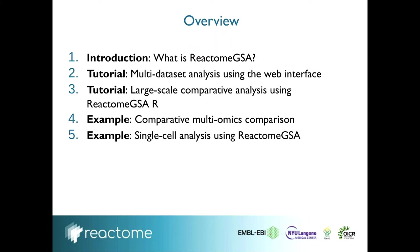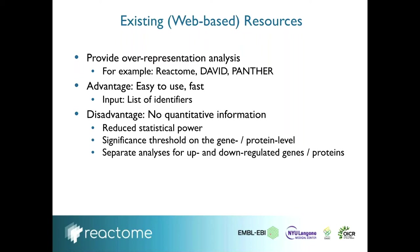Most of you have probably used web-based resources for pathway analysis. These generally use over-representation analyses - tools like Reactome, Tabula, or PANTHER. These are the kind of analysis where you copy and paste a list of identifiers into a text box, click process, and get your enriched pathways. The advantage is they're really easy to use and incredibly fast.